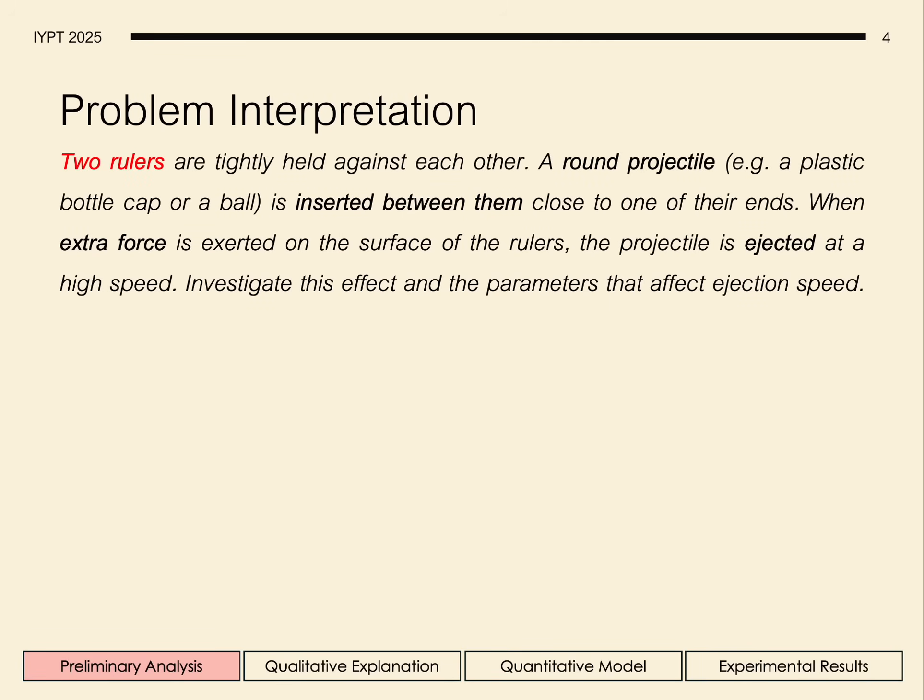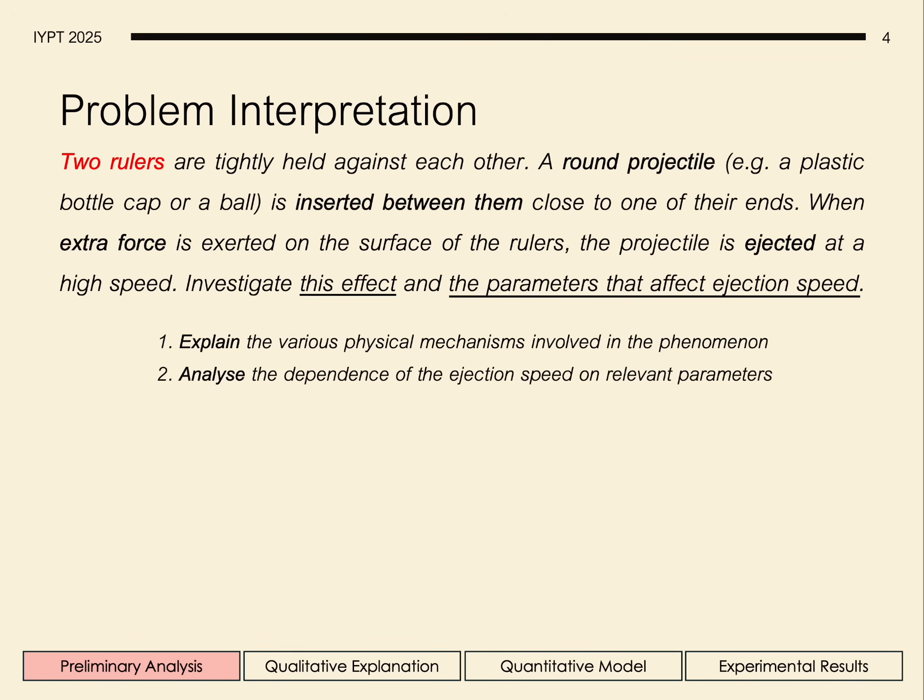The problem statement tells us to place two rulers tightly held against each other and a round projectile between them close to one of their ends. Then extra force is exerted on the surface of the rulers, and the projectile is ejected at a high speed. Our main tasks will be to explain this effect and analyze the dependence of the ejection speed on various parameters.